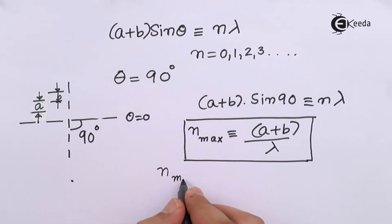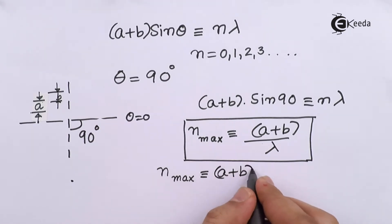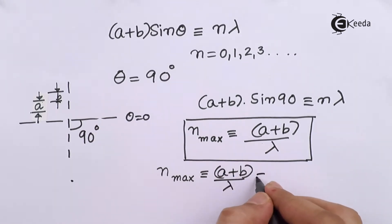And your d is actually equal to a plus b, so you can write this down as n max is equal to a plus b upon lambda, equal to d upon lambda.